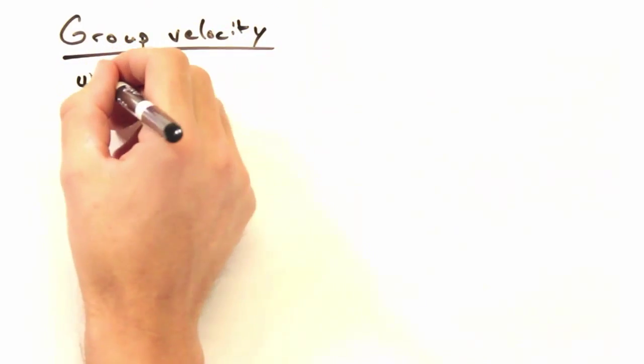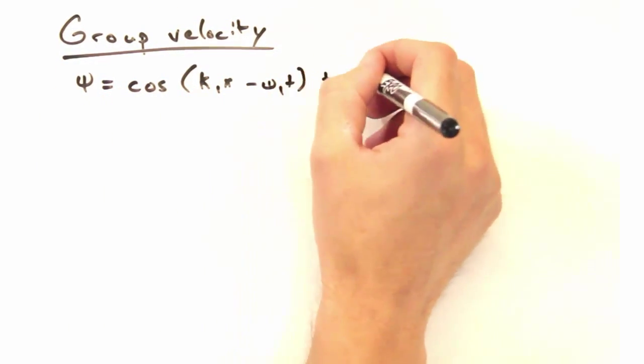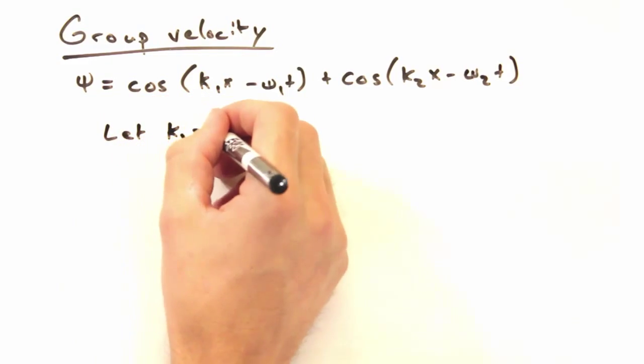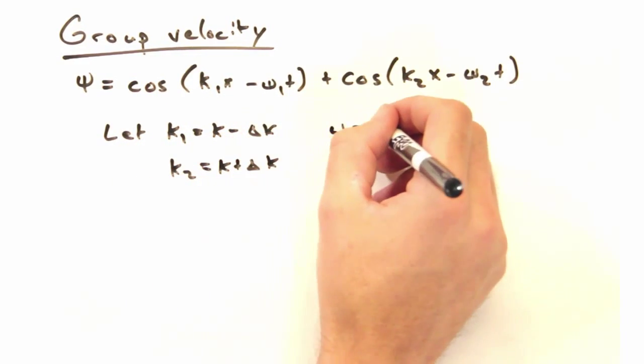Well, what about the group velocity then? Isn't that also the amount of distance over time? Almost. We can think of our waves in terms of phase and group velocities.